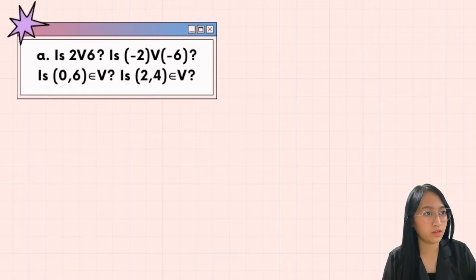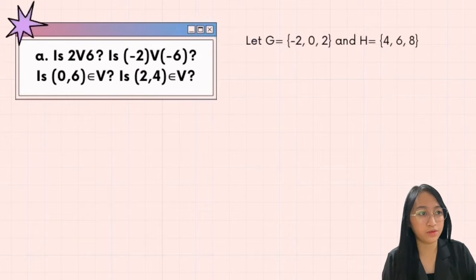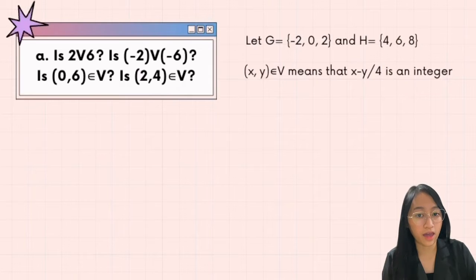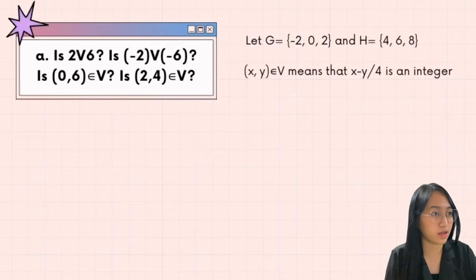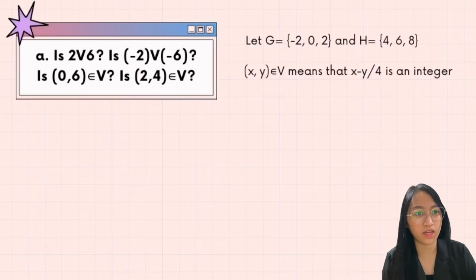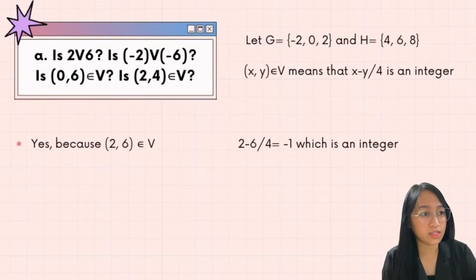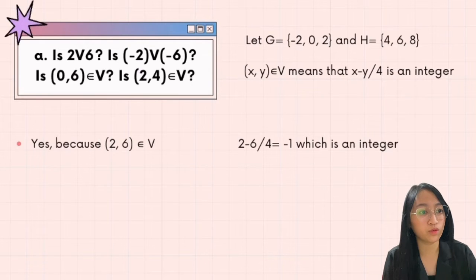For the first question: is 2 related to 6? The answer is yes, because (2, 6) is an element of V. Our x is 2 and our y is 6, so 2 minus 6 over 4 equals negative 1, which is an integer.